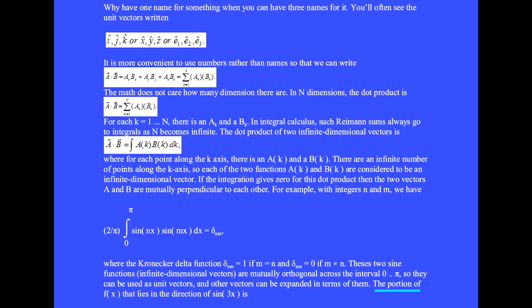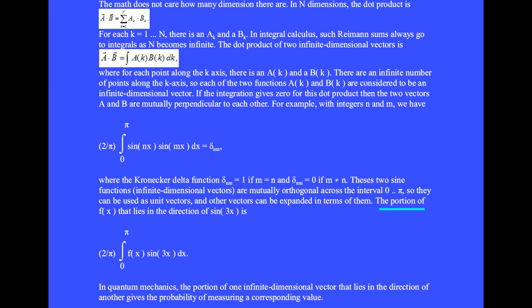The portion of f(x) that lies in the direction of sin(3x) is (2/π) times the integral from zero to π of f(x) sin(3x) dx. In quantum mechanics, the portion of one infinite-dimensional vector that lies in the direction of another gives the probability of measuring a corresponding value.